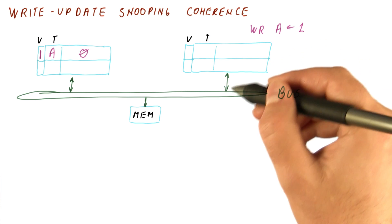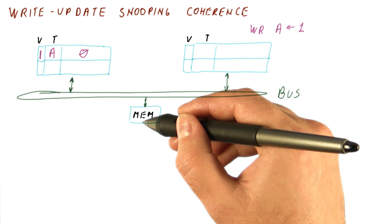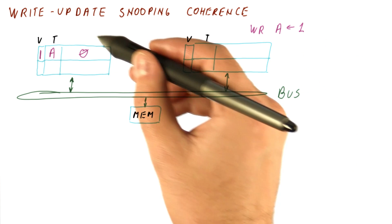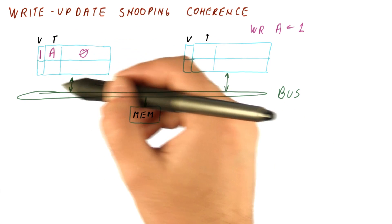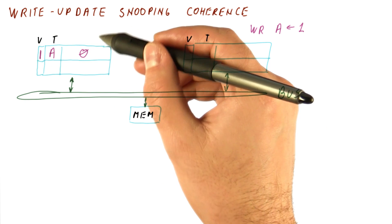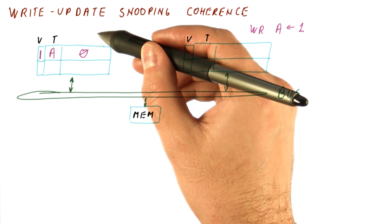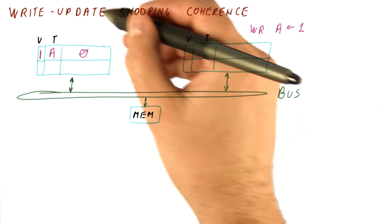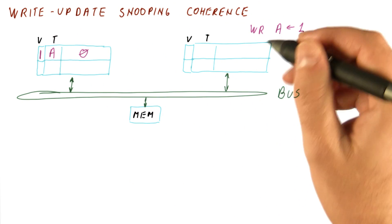This write, even if we made it go all the way to memory, would not result in coherent behavior for this cache, because a subsequent read here would still hit in the cache and get a zero. This is when write update and snooping come into the picture.